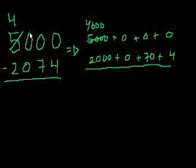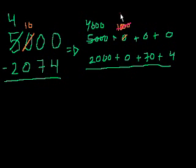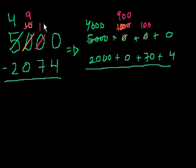We took 1,000 from the thousands place and put it into the hundreds place — in the hundreds place it's represented as 1,000. That's why it's written as 10 hundreds. But we need it over in the tens and ones. So let's take 100 out of this 1,000 to put in the tens place — so this becomes 900. We have 10 hundreds, we're taking one of the hundreds, we have 9 hundreds left, and we're putting that 100 in the tens place, so it becomes 10 tens.